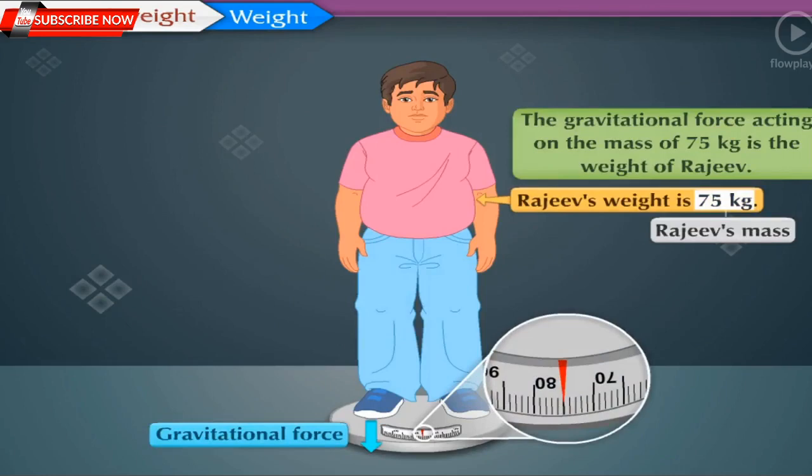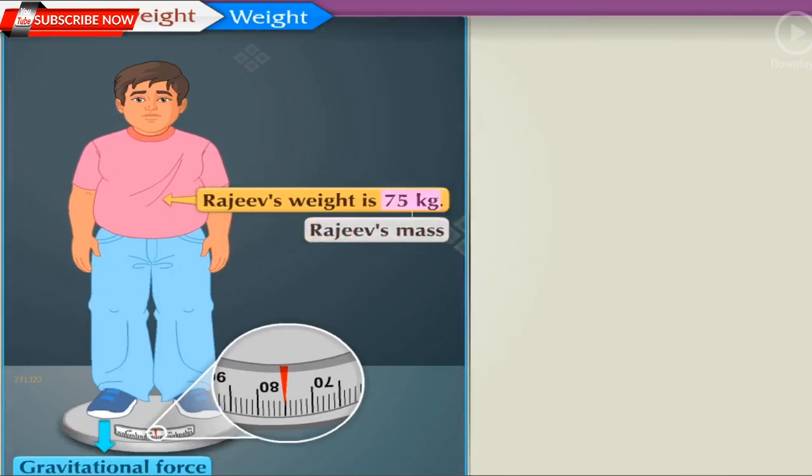The gravitational force acting on the mass of 75 kilograms is the weight of Rajiv. As Rajiv's mass is 75 kilograms, his weight on the Earth is F equals mass M into acceleration due to gravity g which is equal to 75 into 9.8 which is equal to 735 newtons.